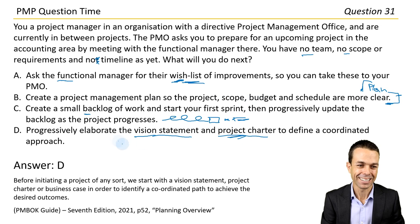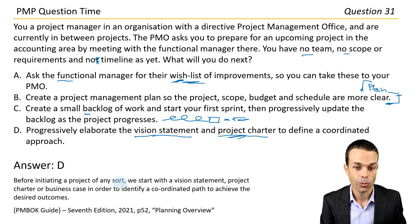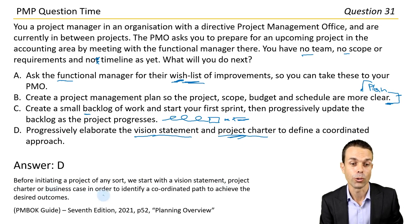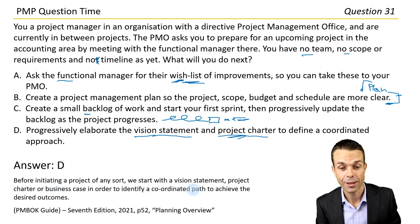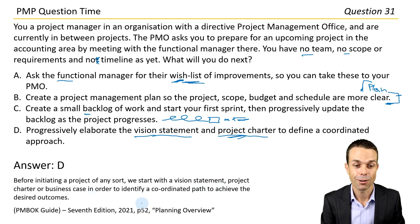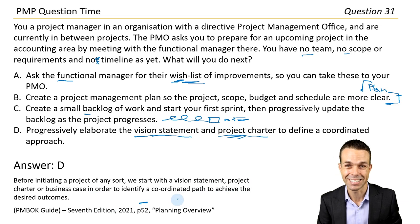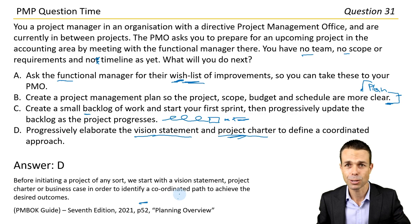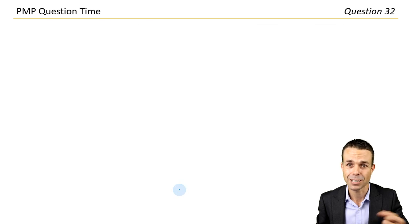Excellent work. Before initiating a project of any sort, we start with a vision statement, project charter, or business case in order to identify a coordinated path to achieve the desired outcomes. Page 52 under planning overview in the PMBOK Guide 7th edition. A little bit of leadership, a little bit of vision — that's pretty good.